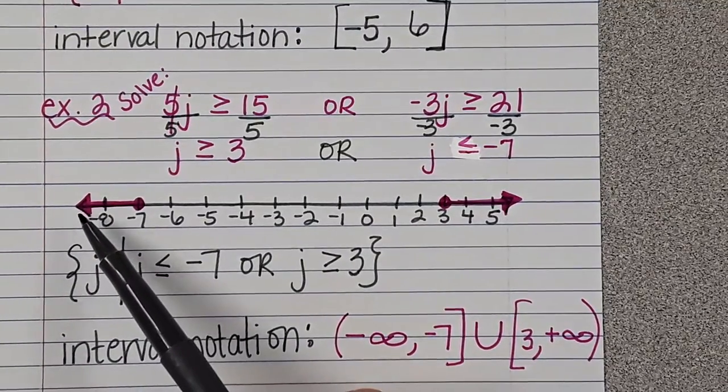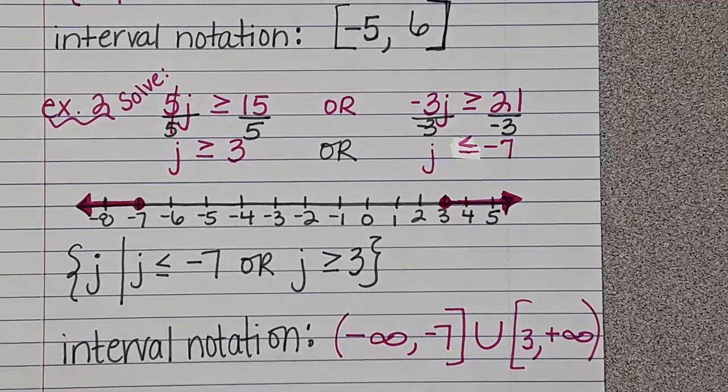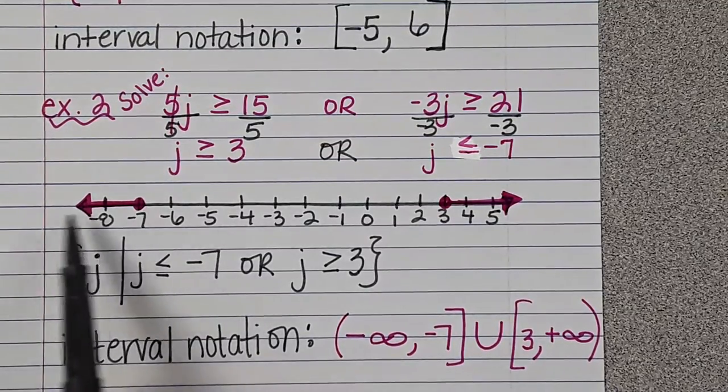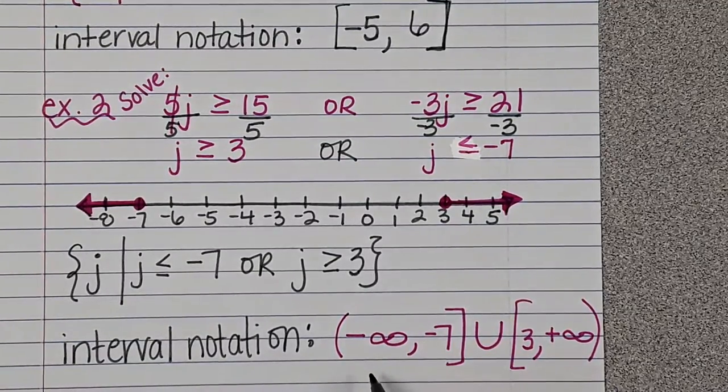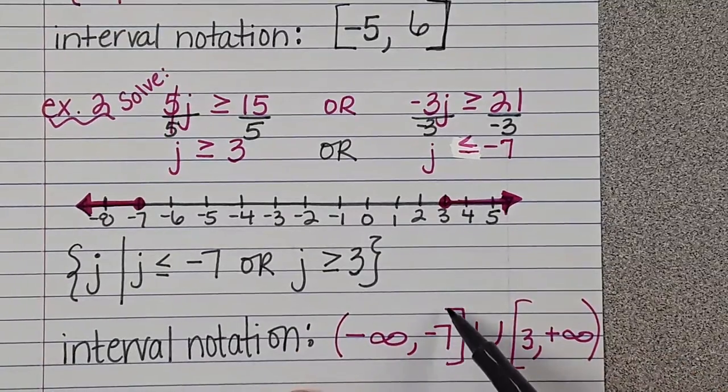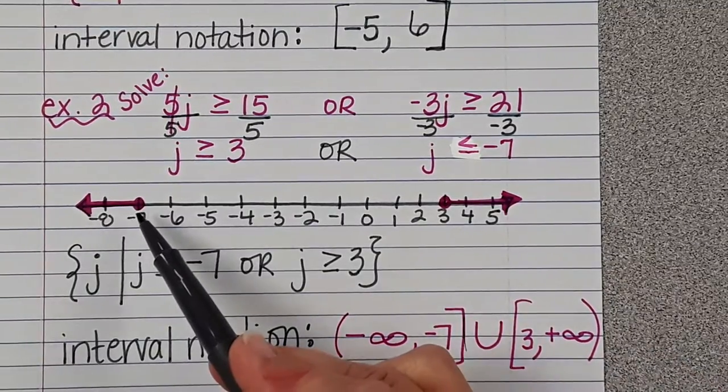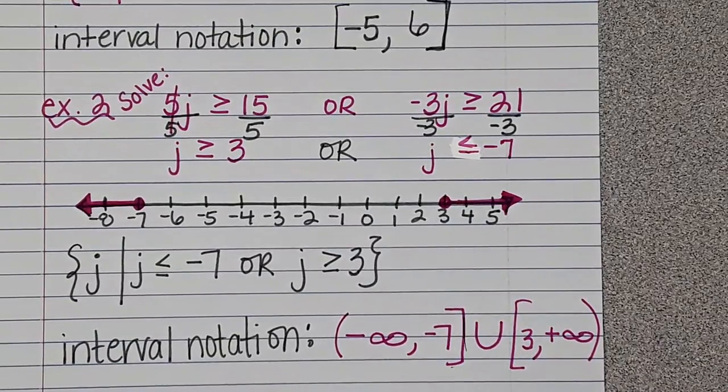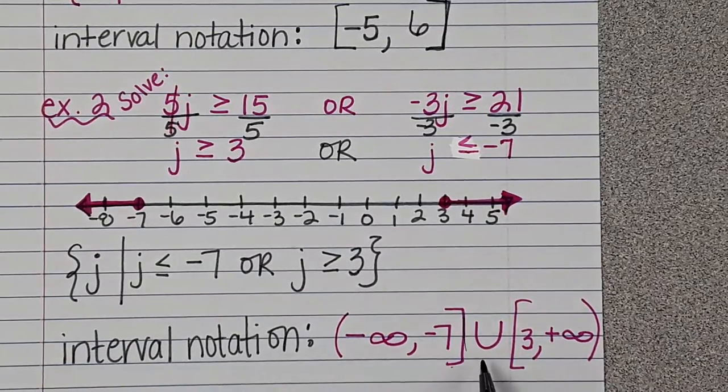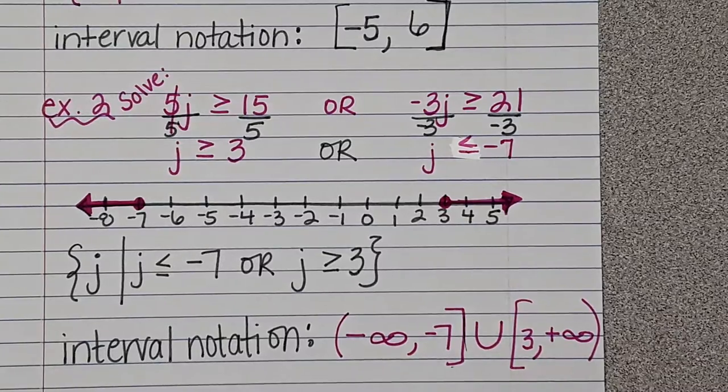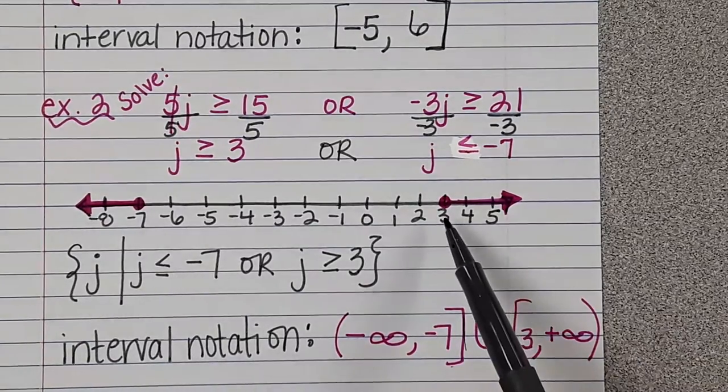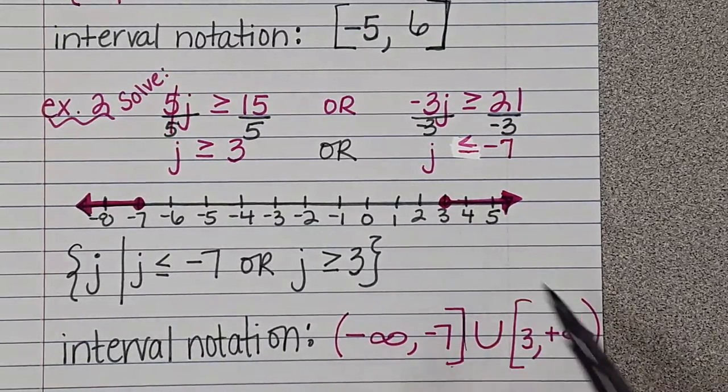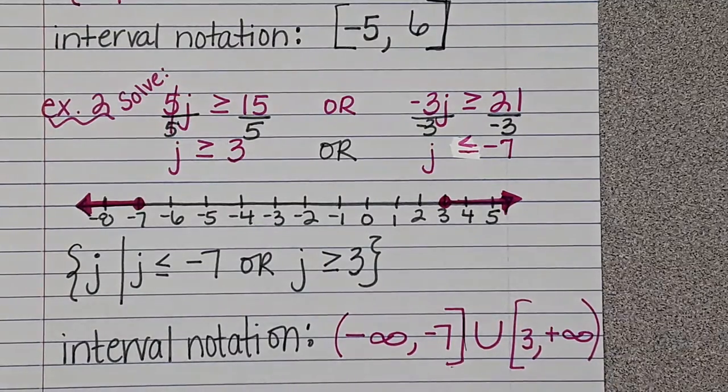This goes to negative infinity. It starts at, we don't know where it goes, so it keeps going and going. That's why it's negative infinity. It stops at negative seven, and there's a bracket because it's a closed circle. Union means we're combining both of those answers because of the or. That's why that U is there because it's or. It's bracket because it's a closed circle. It starts at three, and then it's going to continue forever.